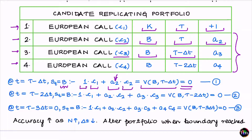Moving back to time T minus 2·delta-t, again assuming stock price equals B: C4 has just expired with strike B and current stock price B, so it expires worthless. At this time point, three options are alive: C1, C2, and C3. The value of the replicating portfolio is 1·C1 plus a2·C2 plus a3·C3.